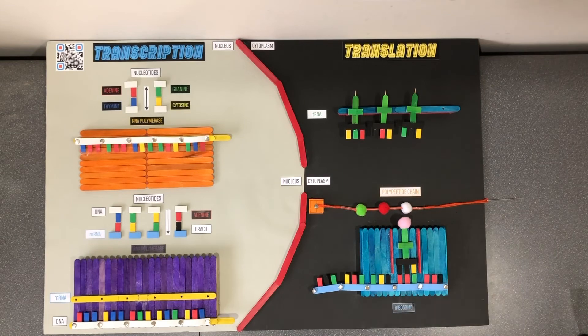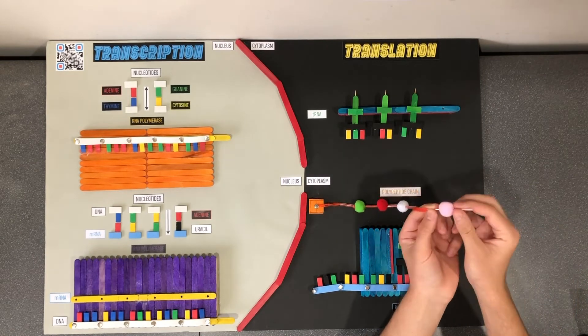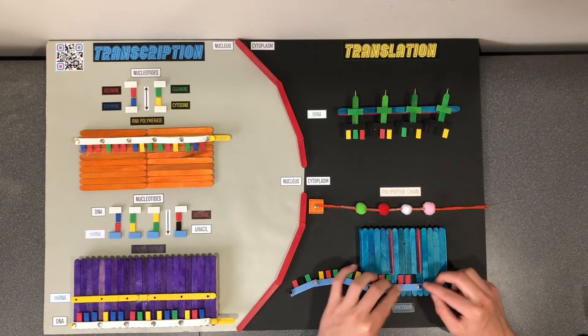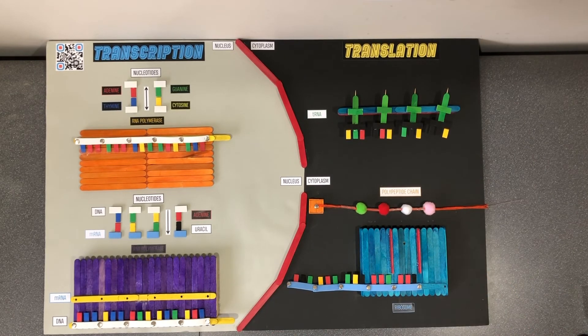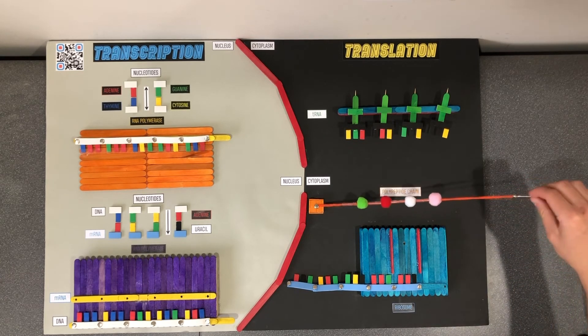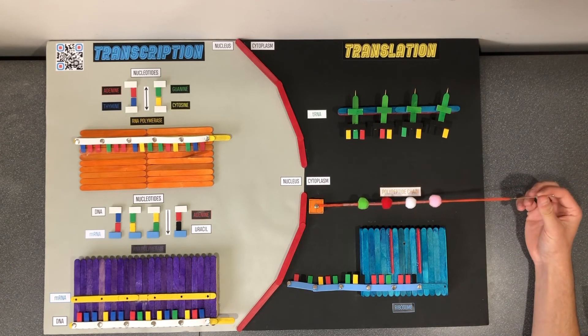Once the ribosome reaches a stop codon, the growing polypeptide chain will terminate and polypeptide synthesis for this specific segment of the DNA has been completed. The polypeptide will then fold into a three-dimensional, fully functional protein that will play a vital role in keeping you alive.